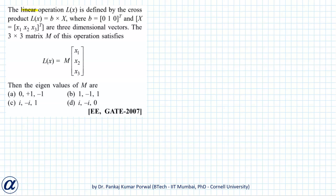In this question, we are given a linear operation Lx which is defined by the cross product of vector b and vector x. We are given vector b and vector x, and we can also represent this linear operation Lx by matrix multiplication, where we pre-multiply the given vector with matrix M and get the same linear operation. Then we want to find the eigenvalues of the matrix version of our linear operation.